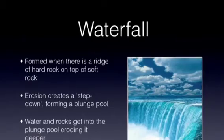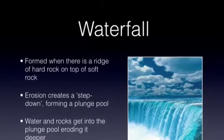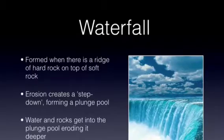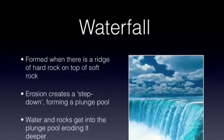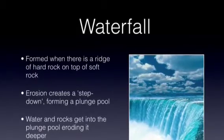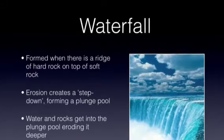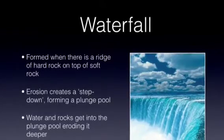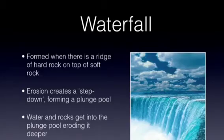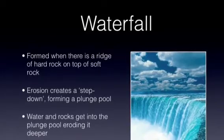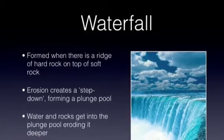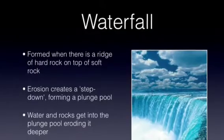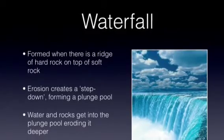Waterfalls are formed when there is a ridge of more resistant rock above less resistant rock. The flow of water transports by traction and saltation and performs hydraulic action and abrasion, eroding the lower less resistant rock much more, creating a step down. This step down creates a plunge pool and therefore makes the rock and debris swirl around in this plunge pool.